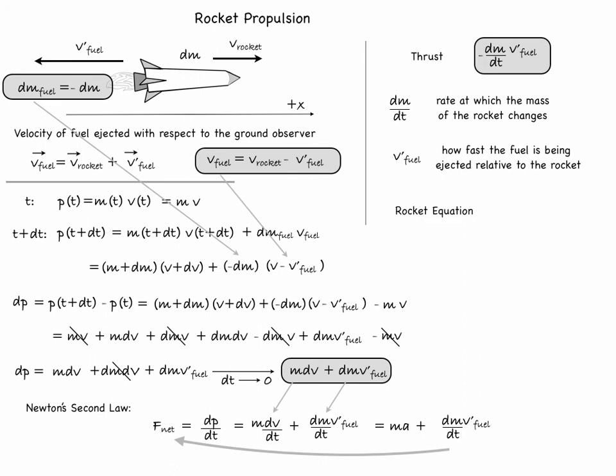So now we can write the rocket equation as the net external force plus the thrust must be equal to the mass times the acceleration. And here's how it looks in vector notation.